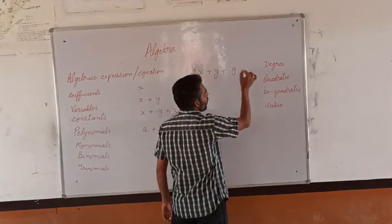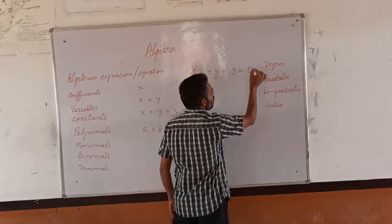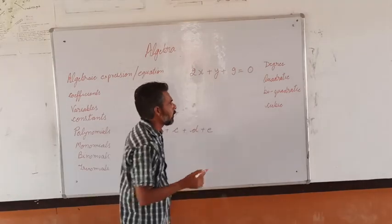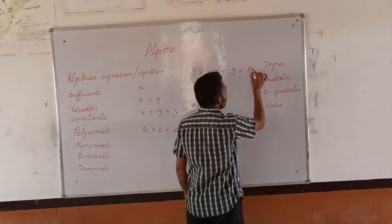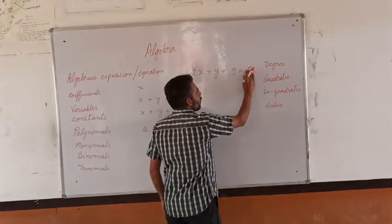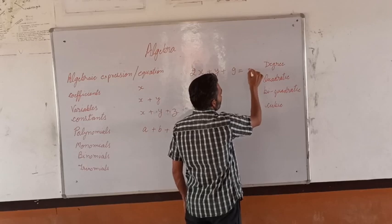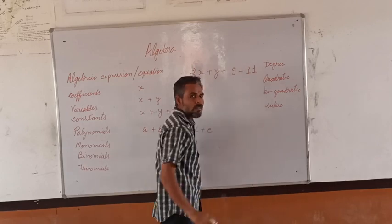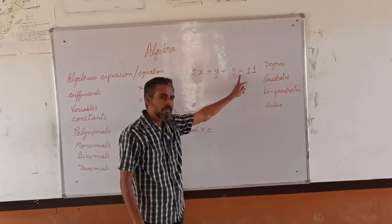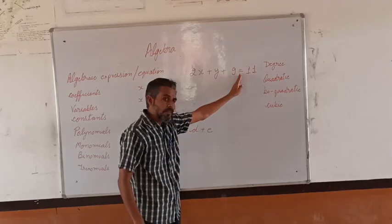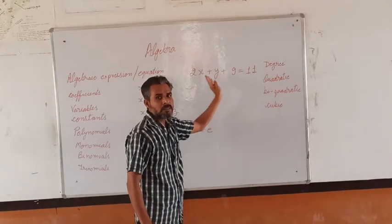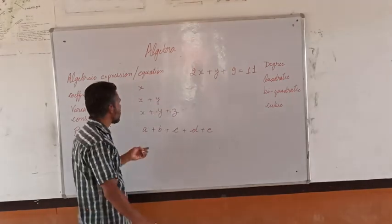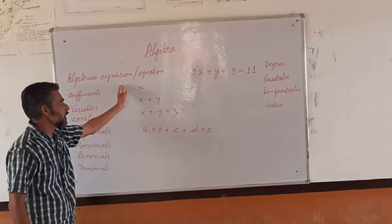If I write equals to 0 or equals to 8 or equals to 11, the sign of equality should be there. With that sign, the algebraic expression becomes an equation. This is the basic difference between algebraic expression and equation.